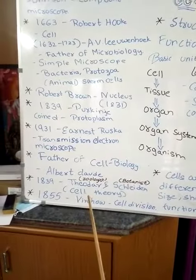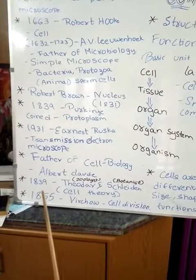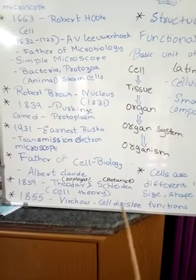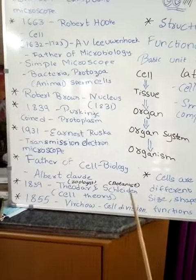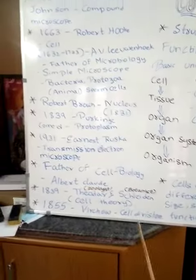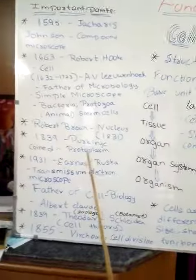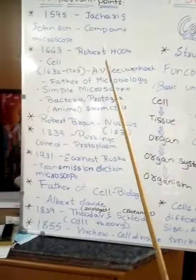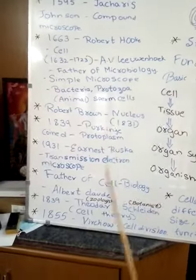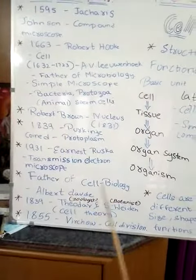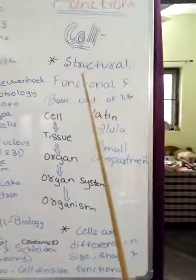In 1839, Theodore Schwann, a zoologist, and Matthias Schleiden, a botanist, together proposed the cell theory. In 1855, Rudolf Virchow discovered cell division. An important thing to note is that from the discovery of the cell to the cell theory, there is a gap of about 200 years.